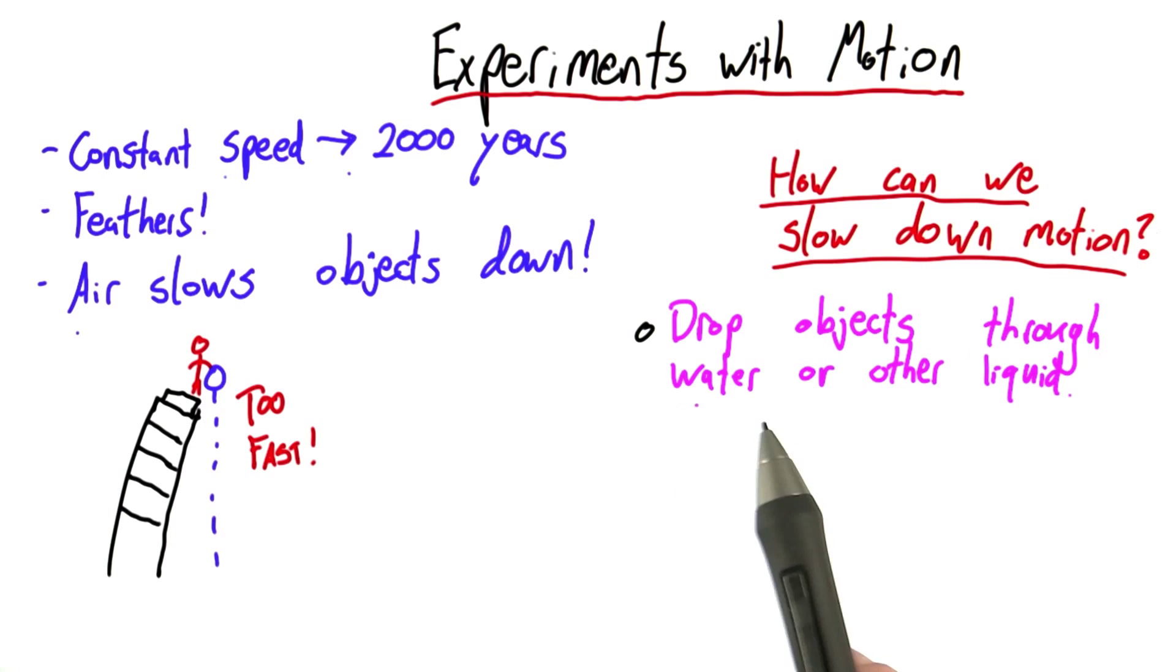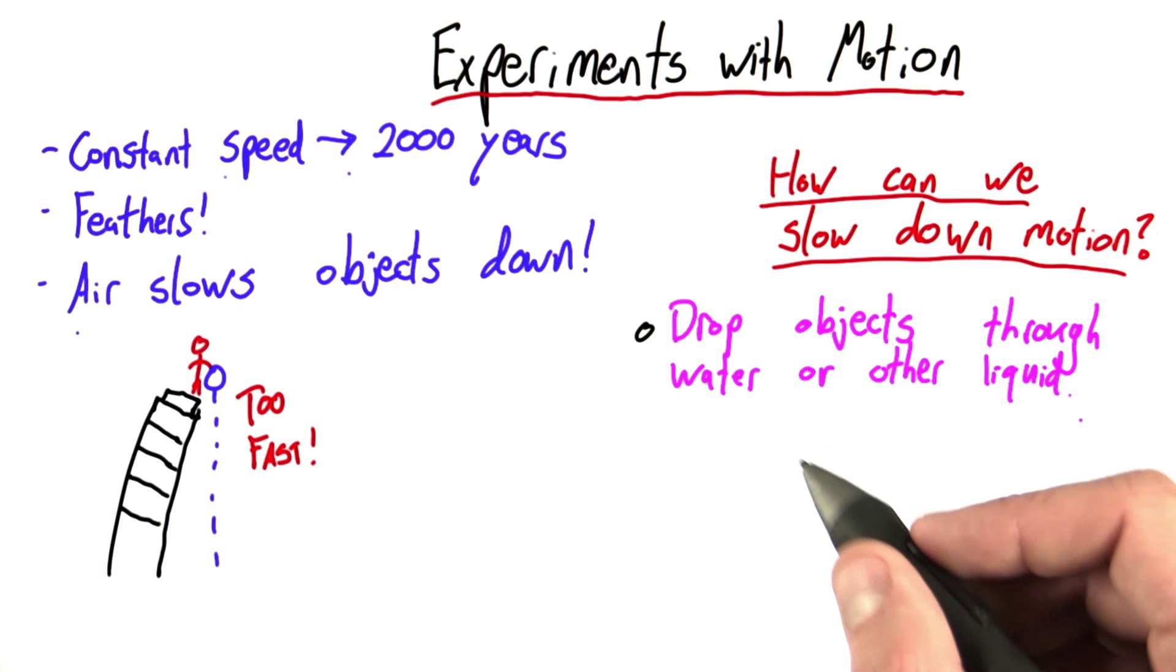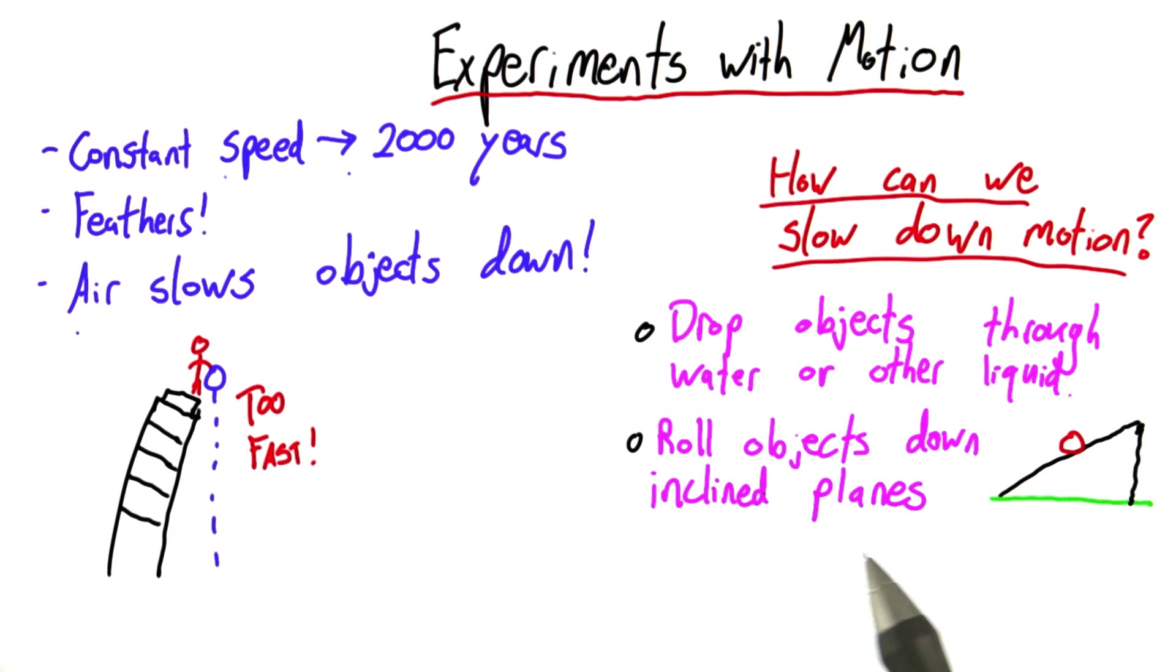So, should we drop objects through water or some other liquid to slow them down? Should we roll objects down inclined planes, and an inclined plane is just another word for a ramp, or should we still drop our objects through the air, but just attach a parachute to them to slow them down?